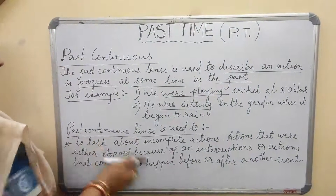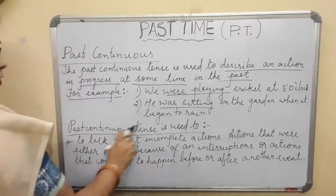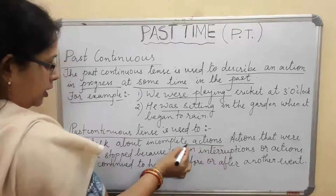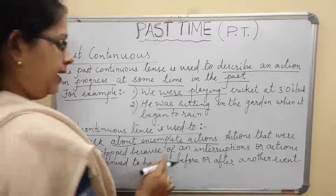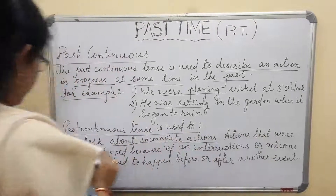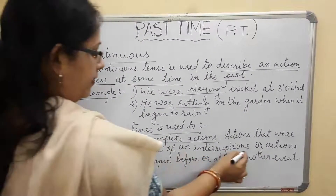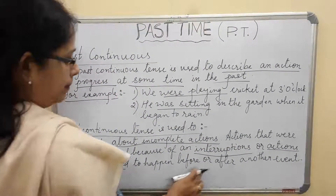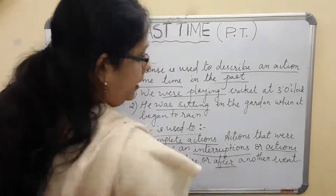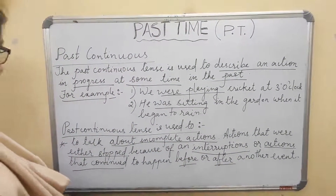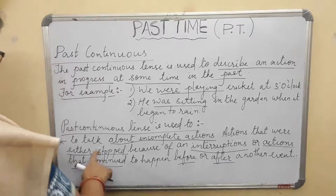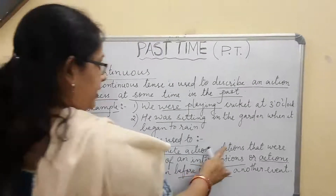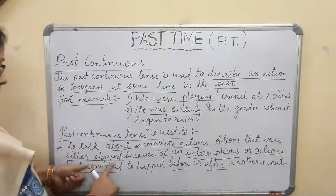Now let us discuss where we use the past continuous tense. The first use is to talk about incomplete actions — actions that were either stopped because of an interruption, or actions that continued to happen before or after another action or event. So incomplete means the action was not completed.